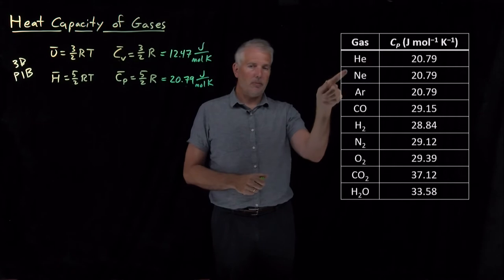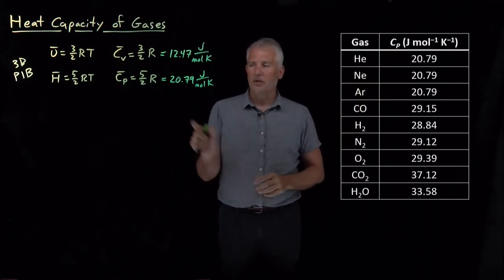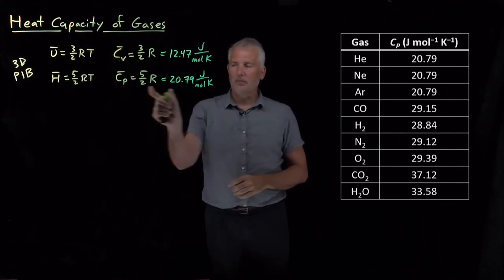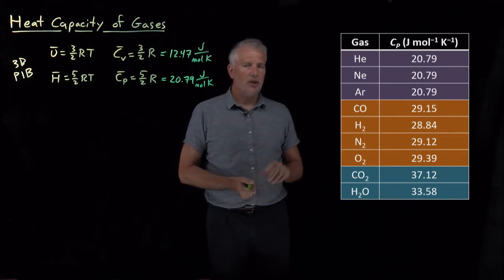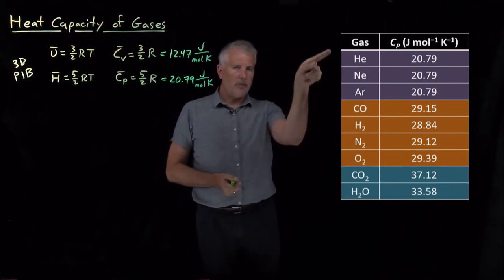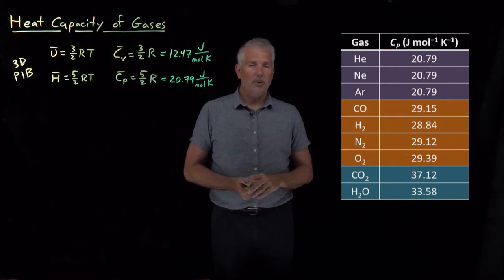Well, some of them do. Helium, neon, argon, the heat capacities of all those gases are exactly 20.79. So the 3D particle in a box is making pretty good predictions. I can color code these values to make it clear what the patterns are. So clearly the first three, helium, neon, argon, the prediction is pretty good for the 3D particle in a box model.